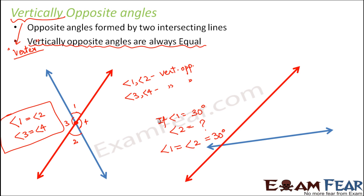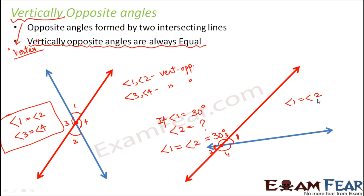Let us look at this example. Here the image is a little different — you see two lines crossing over each other at a point, so they are also intersecting lines and will form vertically opposite angles. If this is angle 1, the vertically opposite angle is angle 2. This angle is angle 3, and this angle is angle 4. So angle 1 equals angle 2, and angle 3 equals angle 4.